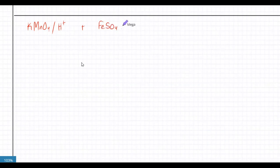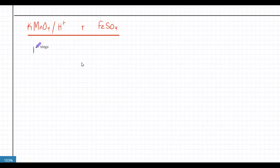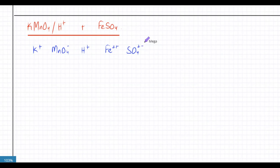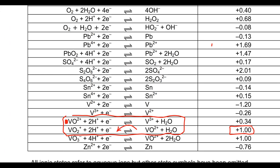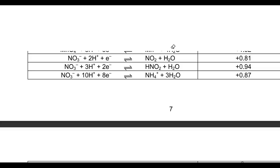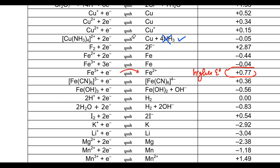We want to figure out what's going to happen according to our electrode potentials. The first thing is you single out the reactants: you've got K⁺, MnO₄⁻, H⁺, Fe²⁺, and SO₄²⁻. We want to figure out who gains electrons and who loses electrons. I'm going to start copying the equations involving any of these reactants.